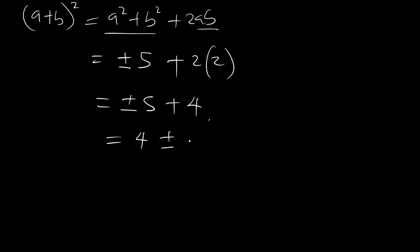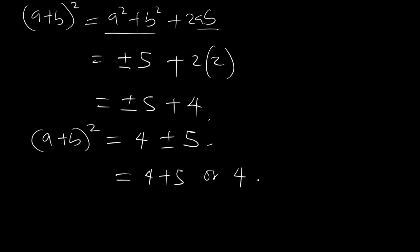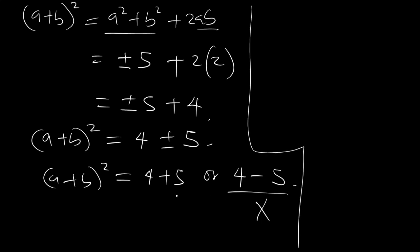So a plus b, all squared, can be written as 4 plus or minus 5. That means we have 4 plus 5, which is 9, or 4 minus 5, which is negative 1. Since negative 1 gives a complex number, that case is not a valid solution.